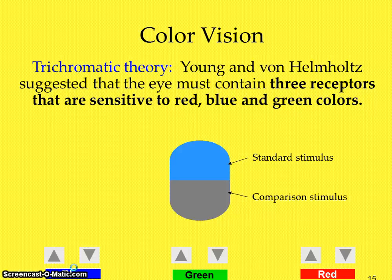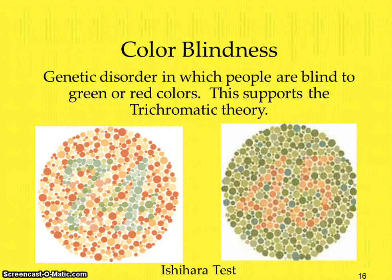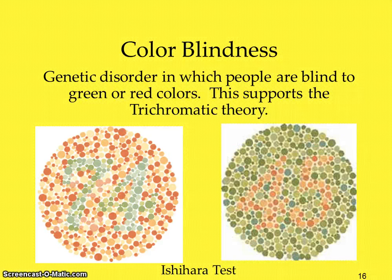Theories of color vision: the most prominent and oldest is the trichromatic theory, where Young and Helmholtz said we have three receptor cells in our retina sensitive to red, blue, and green colors. When we stimulate a combination of these cones, we see other colors. For example, there are no receptor cells that process the color yellow, but when red and green receptor cells are activated at the same time, we see yellow. If you are colorblind, you lack some of those three receptor cells — colorblind individuals only have one or two, called monochromatic or dichromatic — and people are typically blind to green and red colors because those receptor cells aren't being activated together.